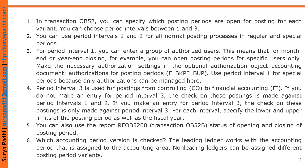For period interval 1, you can enter a group of authorized users. This means that for month-end or year-end close, only specific users are permitted. Make the necessary authorization settings in the optional authorization object Accounting Document — Authorizations for Posting Periods. Use period interval 1 for special periods because only authorizations can be managed here.